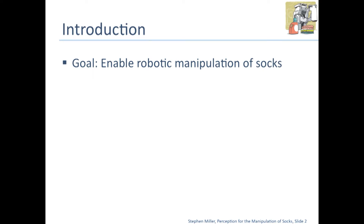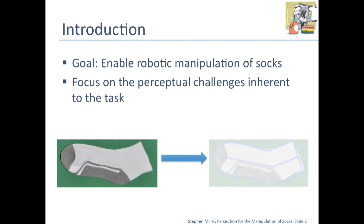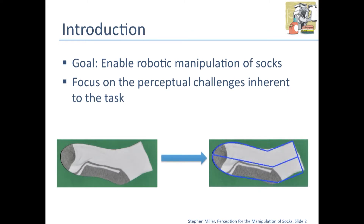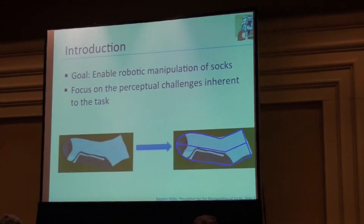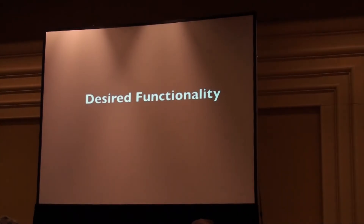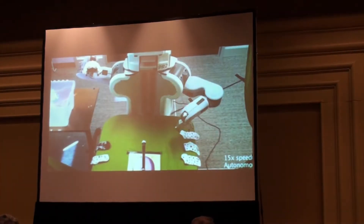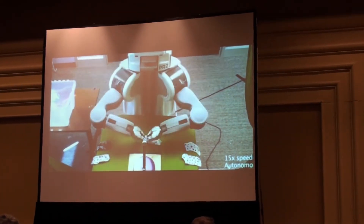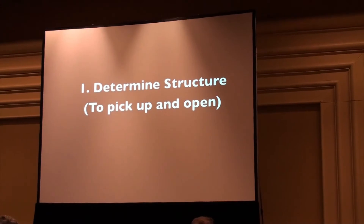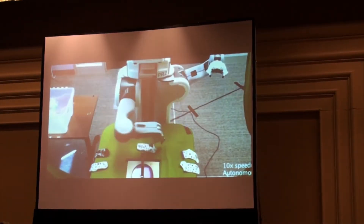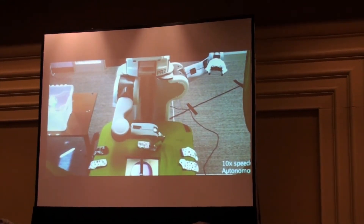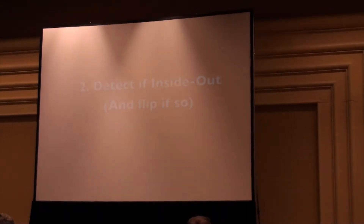A brief introduction. Our goal is to enable robotic manipulation of socks. In this work, we focus on the perceptual challenges of that — namely, how do we get from a single image to some idea of the structure of the sock. Here are some of the functionality we'd like to see: given a robot and a sock, we'd like to be able to determine enough about the structure to pick it up and open it. So you need to know where the ankle is and where the toe is.